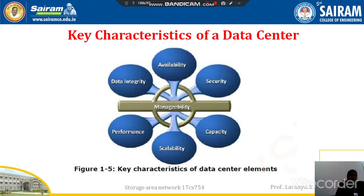The first characteristic is availability. A data center should ensure the availability of data — meaning whenever we require it, we can access the data from a particular app, device, or server. Unavailability means the information is not available in that particular cloud or server. For example, financial services not available in any app or storage device — that is called unavailability of data.